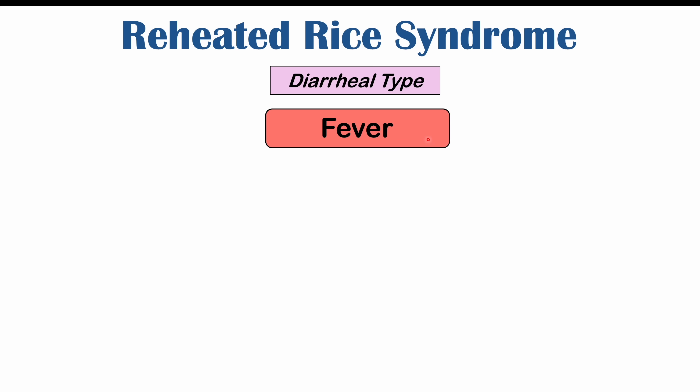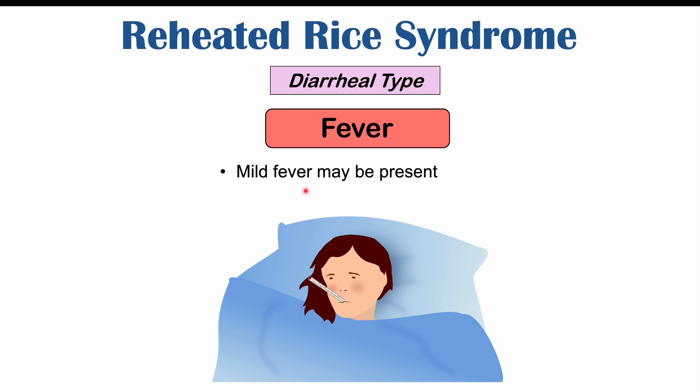Other signs and symptoms of the diarrheal type can include fever. A mild fever may be present — it's generally rare in the emetic type, but it can occur in the diarrheal type due to the consumption of those cells that produce the enterotoxins. The cells themselves lead to an immune reaction within the gastrointestinal system. The fever is going to be low-grade, anywhere from around 38 to 38.5 degrees Celsius, or 100.4 Fahrenheit. As with the emetic type, the signs and symptoms of the diarrheal type will resolve within 24 hours of onset.